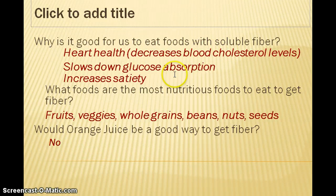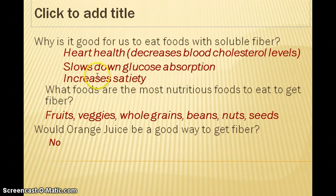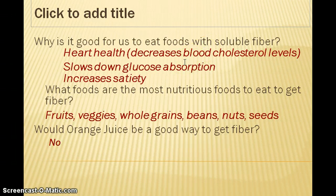Soluble fibers are viscous, meaning they can form a gel — like a thick liquid — in your stomach. This slows down enzyme activity and nutrient absorption, specifically glucose absorption, which is beneficial for someone with diabetes who doesn't want high blood glucose levels. It can also help us feel fuller longer, which may help with weight loss and weight maintenance. You'll see soluble fibers like pectins and gums listed in ingredient lists — look at a salad dressing or a box of pudding — added to foods to thicken them, just as they form thick fluids in our stomach.